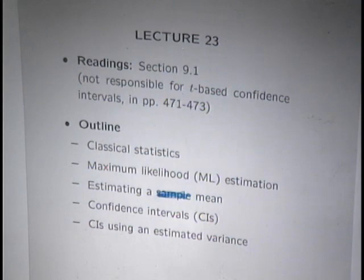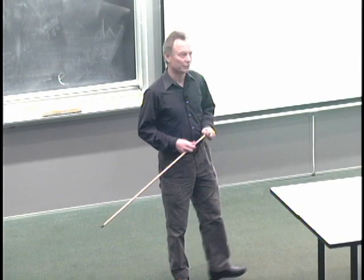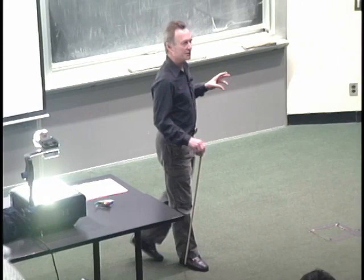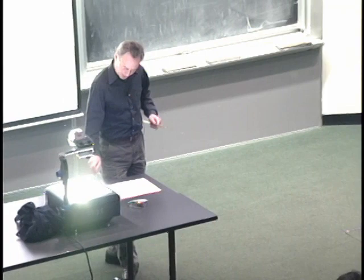We are going to define what it is. Then we will look at the most common estimation problem there is, which is to estimate the mean of a given distribution. And we're going to talk about confidence intervals, which refers to providing an interval around your estimate that has the property that the parameter is highly likely to be inside that interval. But we will be careful about how to interpret that particular statement.